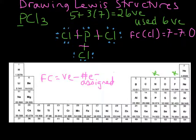That's going to give a formal charge of zero for chlorine. Since all of the chlorines have the same bonding pattern, we only need to calculate the formal charge once for chlorine.